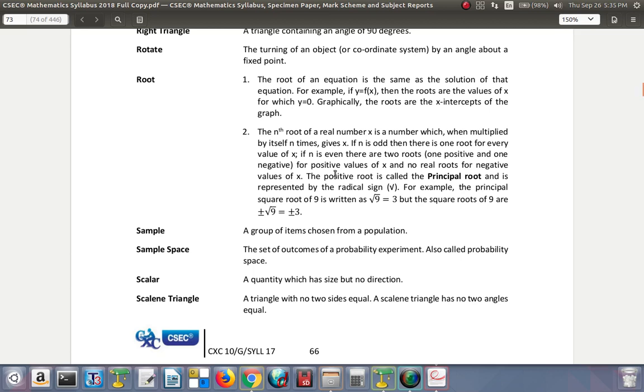Now, the cube root: you will have that number, 3 of that number multiply itself to give you that other number. If n is odd, then there is one root for every value of x. So you cannot have three numbers. For example, 3 by 3 by 3 is 27. 3 times 3 is 9, 9 times 3 is 27. If you have negative 3, when you multiply itself, it will give you negative 27.